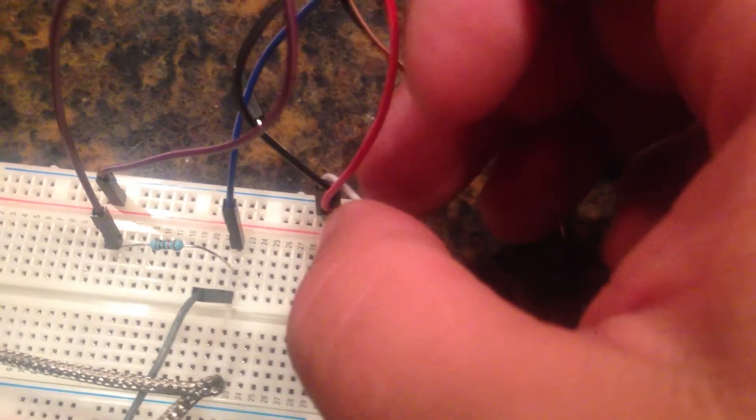I have the lead running to the positive side, and then I have the lead running to the Arduino pin A0. I have the negative side of it on the tip, and it's all from the Arduino negative, positive from the Arduino.